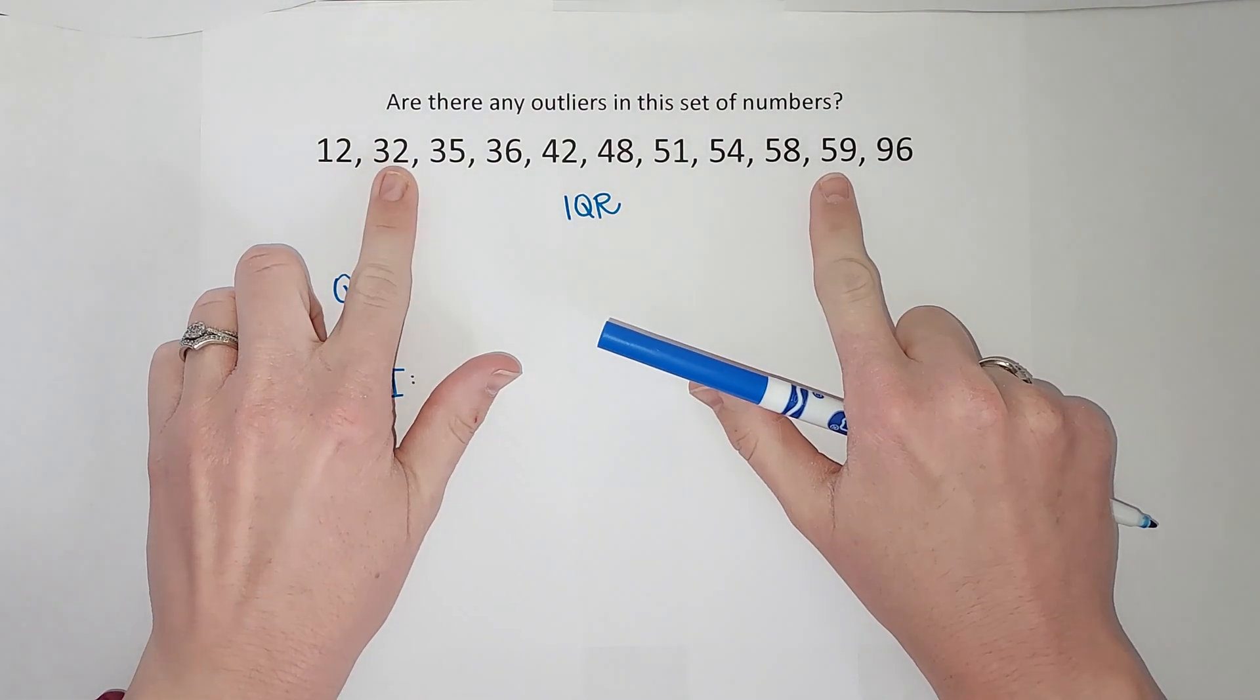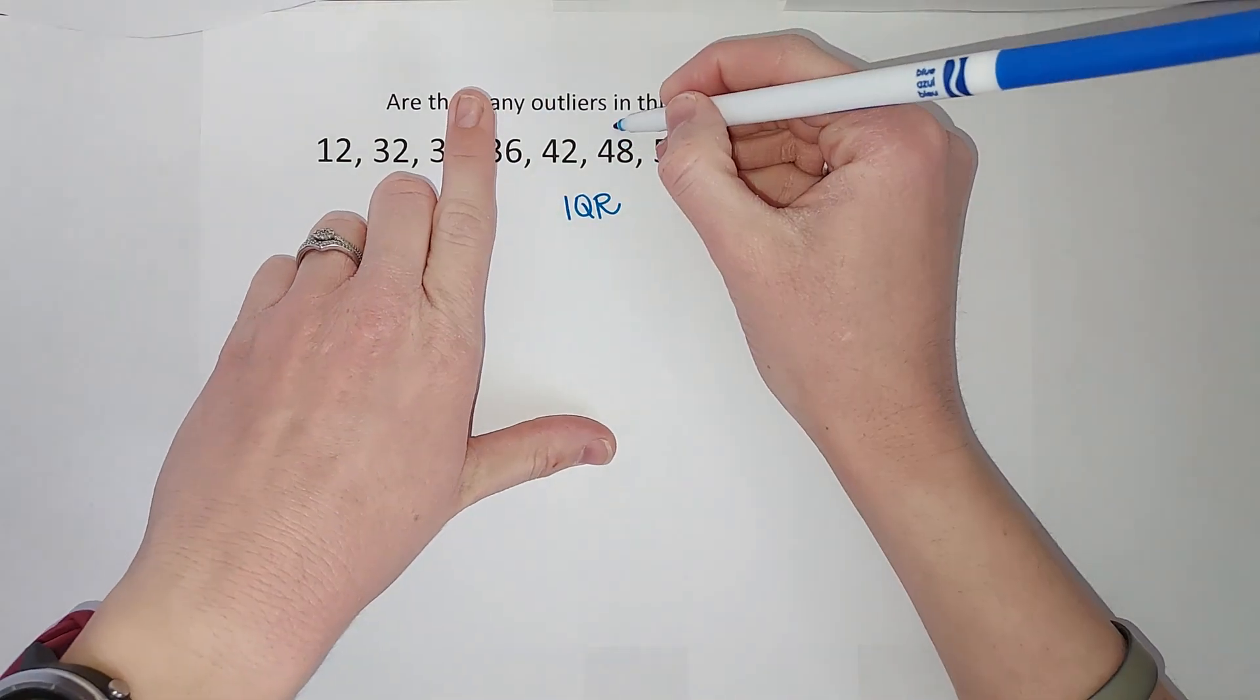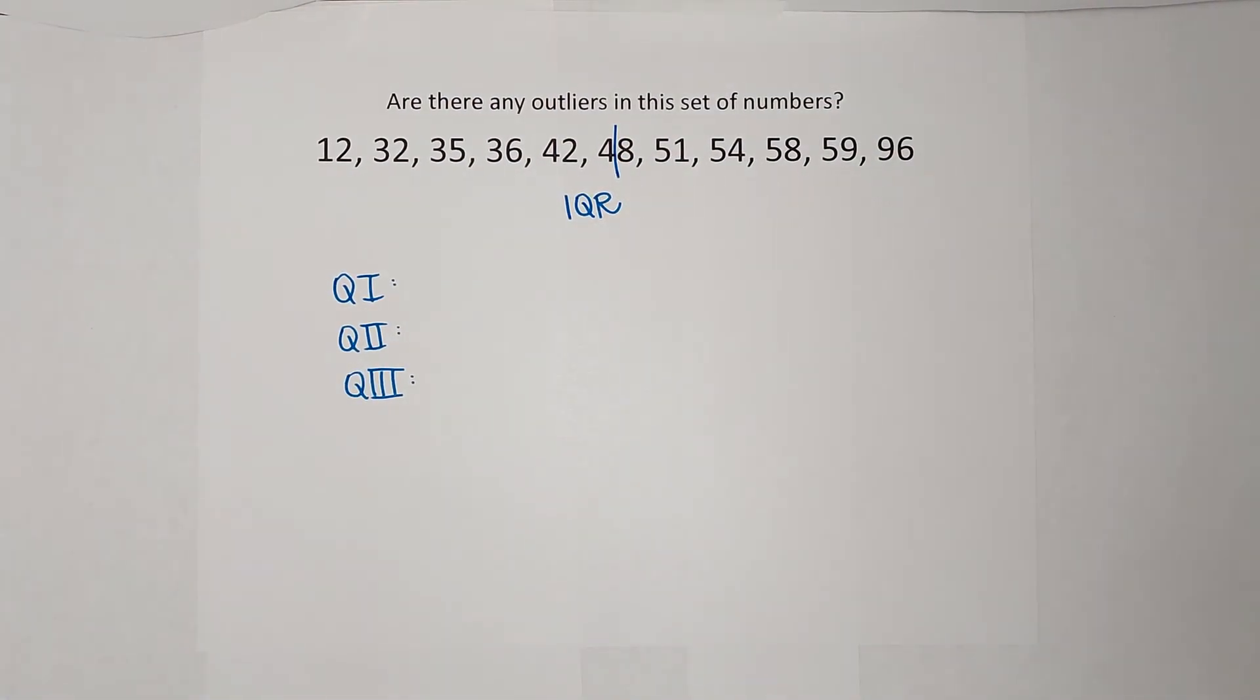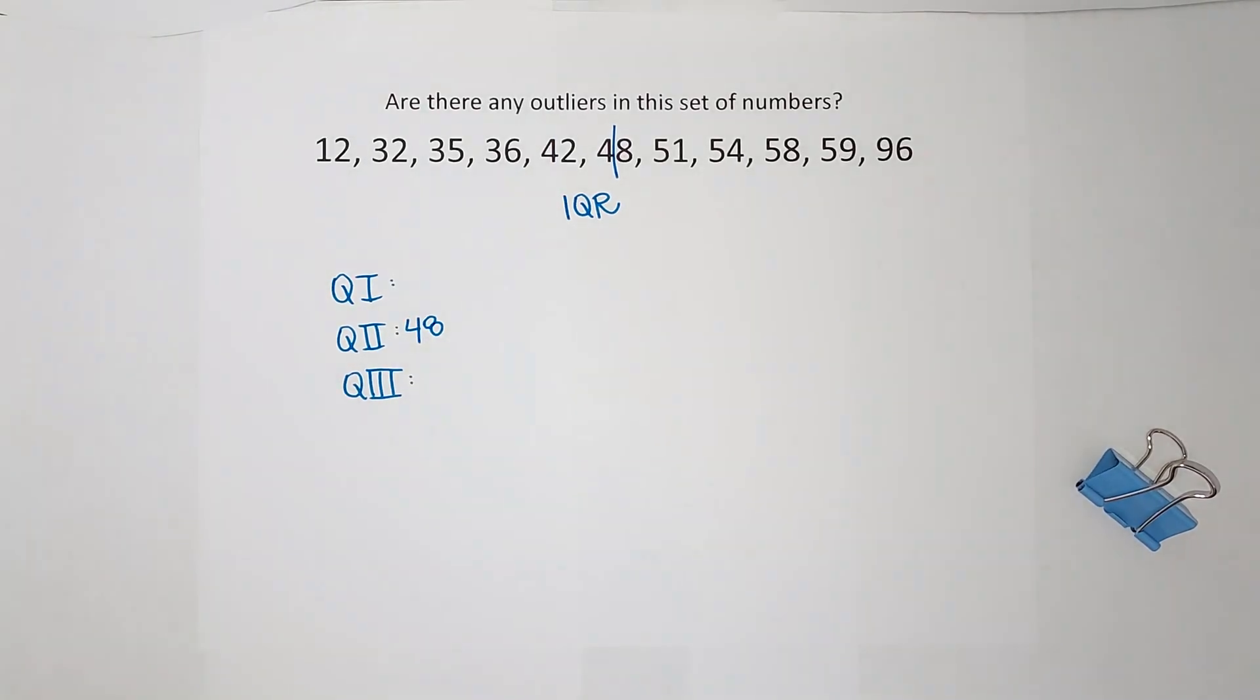So we start usually with our second quartile because it is our median. To find the median, I'm just going to count to the middle. So 48 is my second quartile or my median.